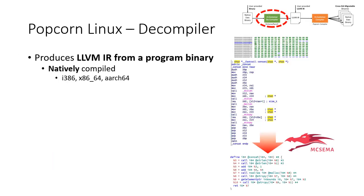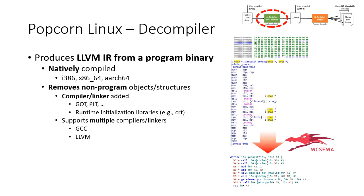Let me provide a few more details about the decompiler. The decompiler produces LLVM IR from a program binary that has been compiled into a specific machine code. Currently, x86 32-bit and 64-bit, as well as ARM 64-bit, are the architectures supported by McSema. Unfortunately, the output of McSema needs to be cleaned up in order to be compiled with the Popcorn compiler framework. Specifically, the fixer removes non-program objects and structures, including ones added by the compiler and linker like GOT and PLT, and runtime initialization libraries. The current version of the fixer supports native binaries created by GCC or LLVM.